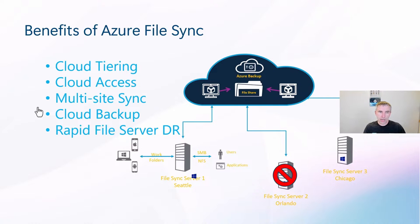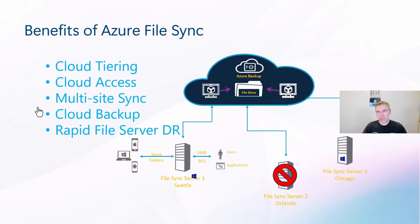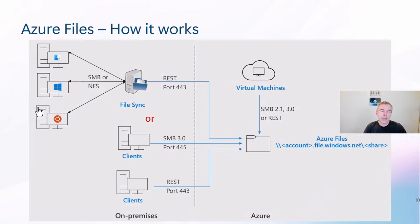I also use Azure File Sync as a solution for rapid file server disaster recovery. Think about if you have a file server in a branch office that fails due to a hardware error. You need to set up a new Windows server with new hardware, and then figure out how to synchronize your data. With Azure File Sync, you can easily set up a new Windows server, install the agent, connect it to the existing Azure File Share, and the agent will directly synchronize all the files from your Azure File Share to your local file server. You now have a disaster recovery solution for your environment.